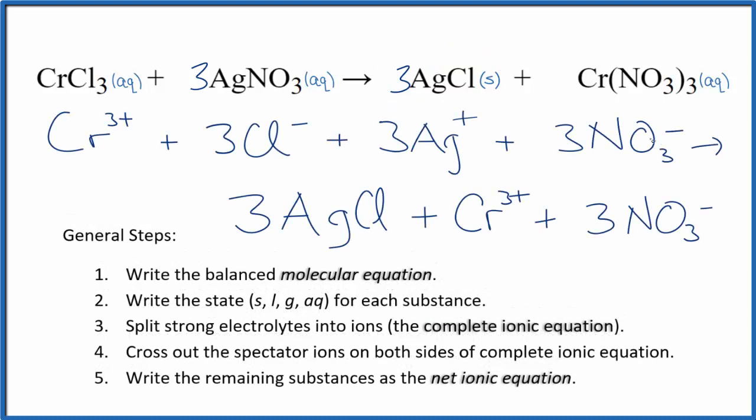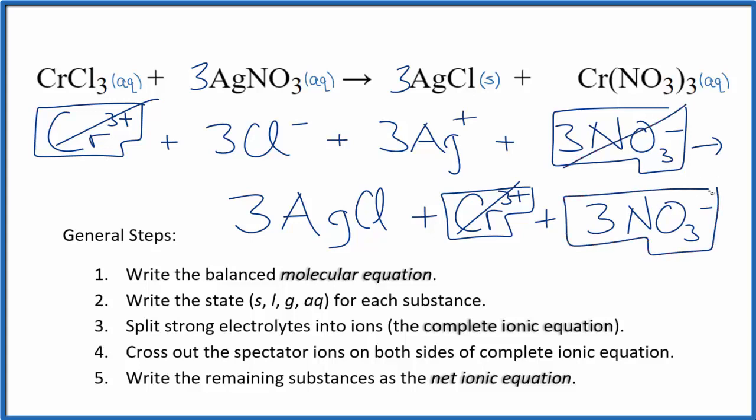At this point we can cross out spectator ions. They're on both sides. So we have the chromium three ion here in the reactants and again in the products. That's a spectator ion. We're going to cross that out. We have three nitrate ions here in the reactants and again in the products. Spectator ions, we cross those out.